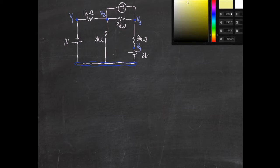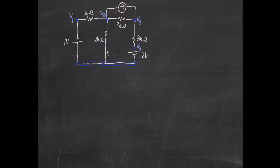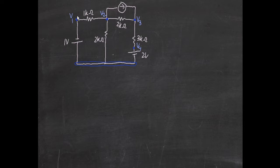For any circuit, we first have to identify the nodes. I have already identified the nodes here. A node is typically a junction of two or more elements. The nodes are v1, v2, and v3. This junction has one element connected to another; this one has four elements connected to it — the current source and three resistors.